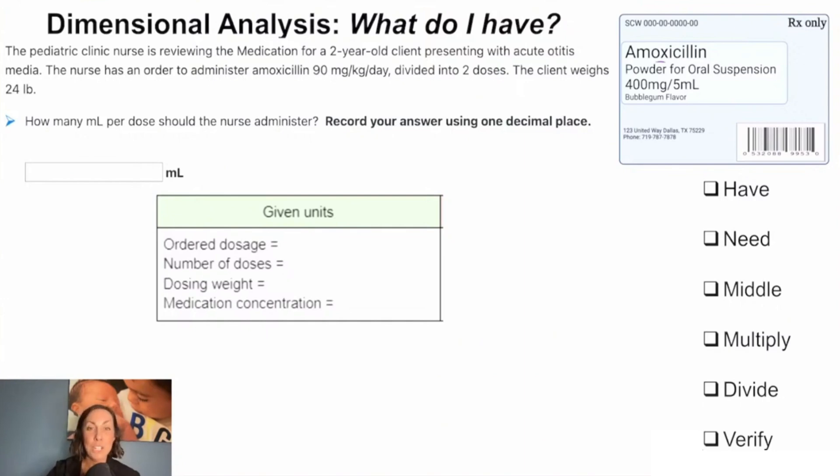This one is going to have a weight conversion in it, so let's read it together. The pediatric clinic nurse is reviewing the medication for a two-year-old client presenting with acute otitis media. The nurse has an order to administer amoxicillin 90 milligrams per kilogram per day divided into two doses. The client weighs 24 pounds. How many milliliters per dose should the nurse administer, and we're going to record using one decimal place.